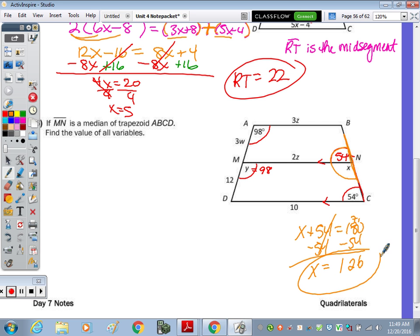Subtract the 54, and X is 126. Do we have any other variables? We found X, we found Y. There is a Z.